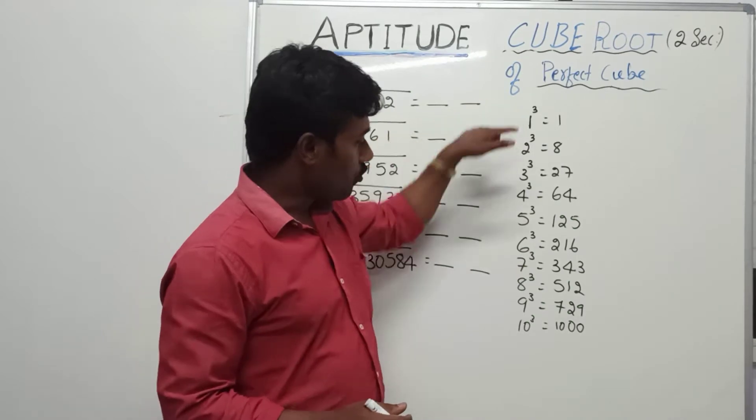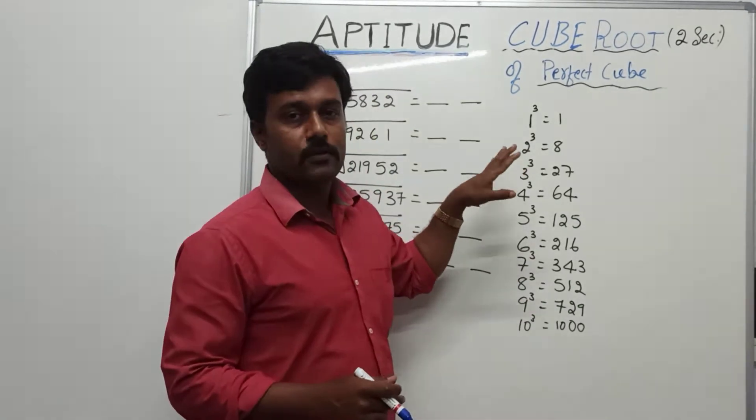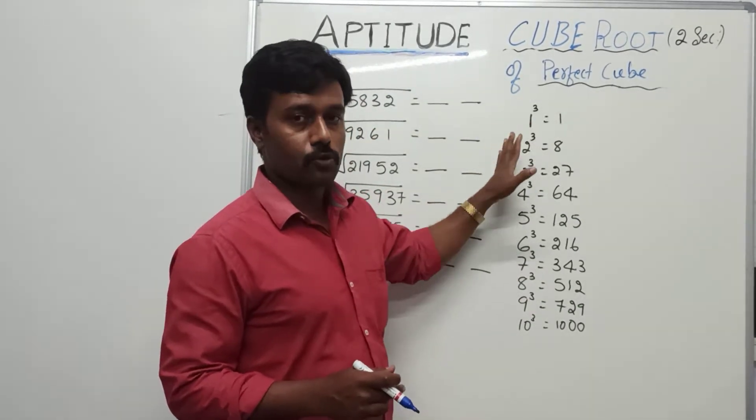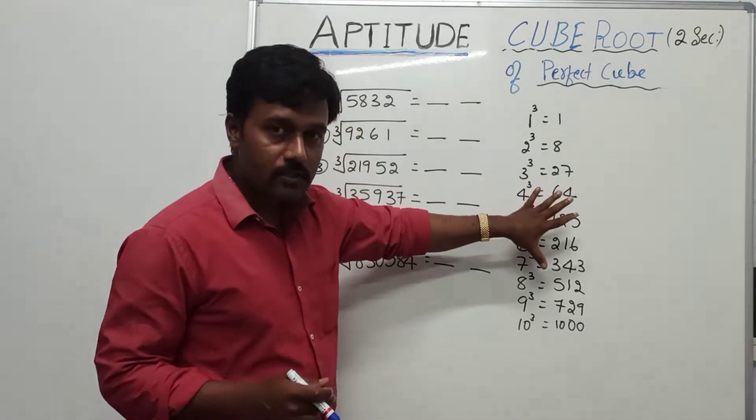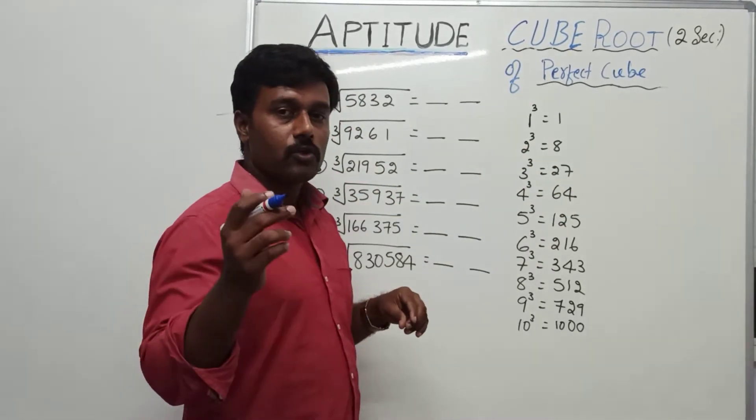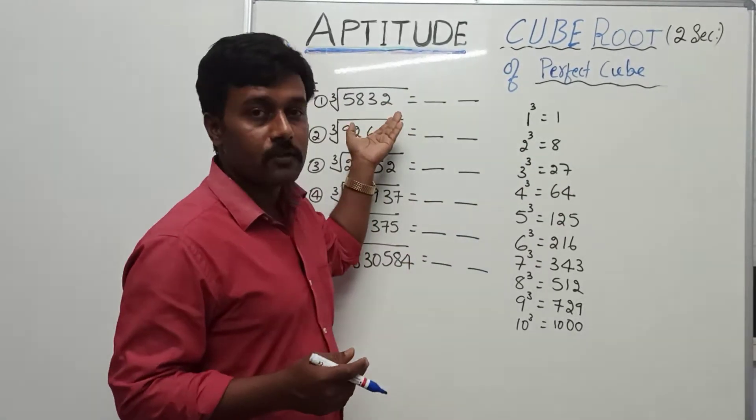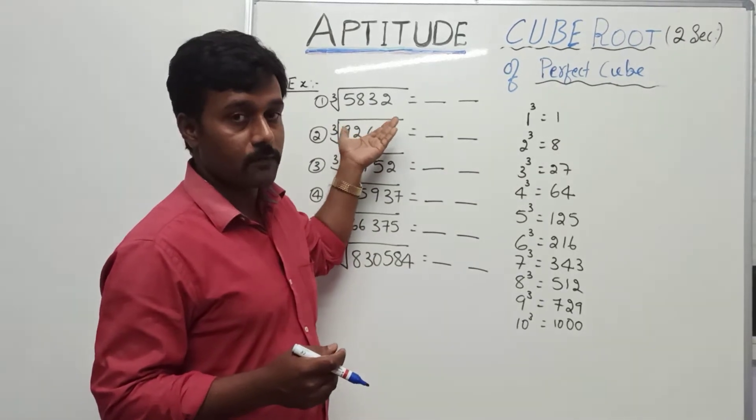Let's see here. First, from 1 to 10, you need to understand and know the perfect cubes. Then, by using this, how can we finish? Within 2 seconds we can find the cube root of the perfect cube.